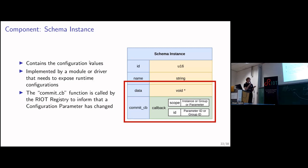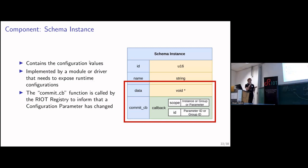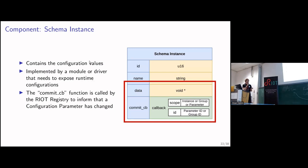The schema instance's most important fields: it has a data field that contains the struct — different for each configuration schema — that holds the actual values. It also has a commit callback function. So if you have a driver implementing this schema, the most important thing is to implement that commit callback. This way, the registry can tell your driver that configurations have changed. There is also a scope field that tells the registry whether the whole schema changed, or maybe just some group, or only a single parameter should be applied.